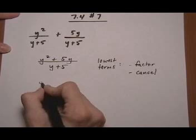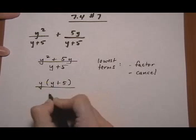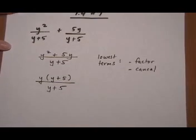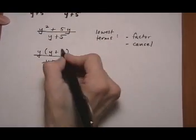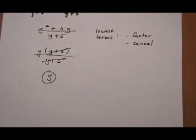So let's factor the numerator. We can pull out a GCF of y and we have y times y plus 5 over the denominator of y plus 5. And now we can go ahead and cancel the common factor y plus 5. So our final answer there is a y.